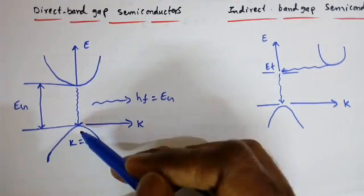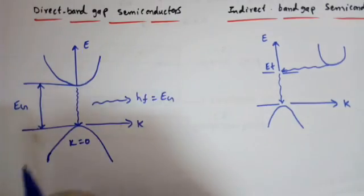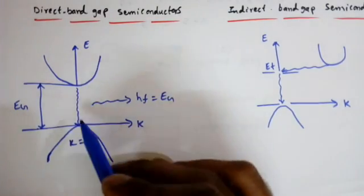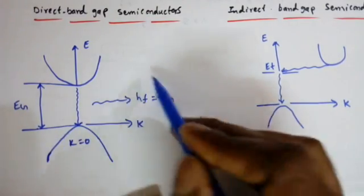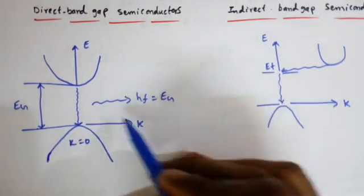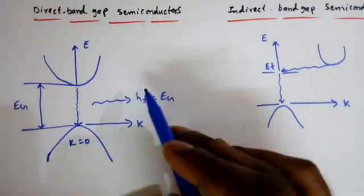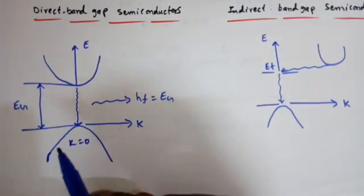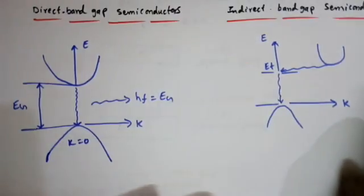The electron directly falls from the conduction band to the valence band without any momentum change. Whenever it falls, it radiates the energy in the form of a photon — that is, in the form of light.